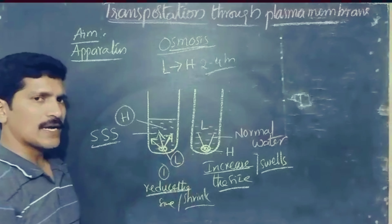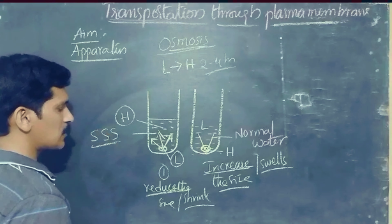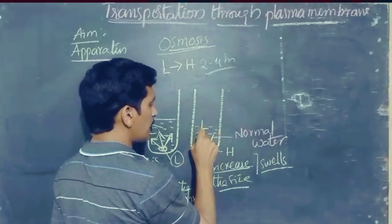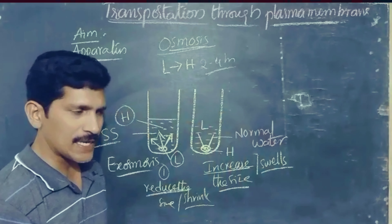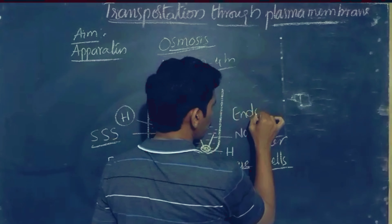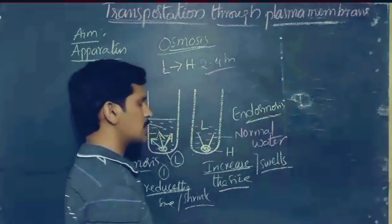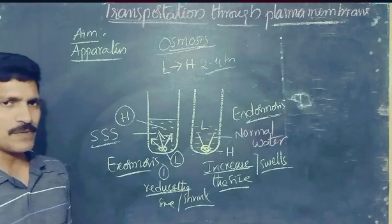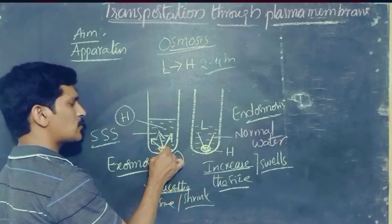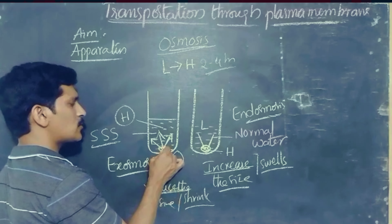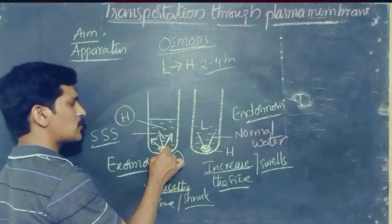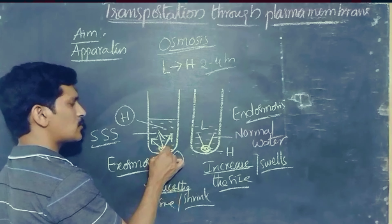In both situations, we observe the movement of molecules. In the first glass tumbler, movement occurs from inside the cell to outside, through the membrane — the outer layer of the dry grape acts like a plasma membrane. The osmosis process occurs toward outside the cell, so it is called exosmosis. In the second case, molecule movement occurs from outside to inside the cell, so it is called endosmosis.